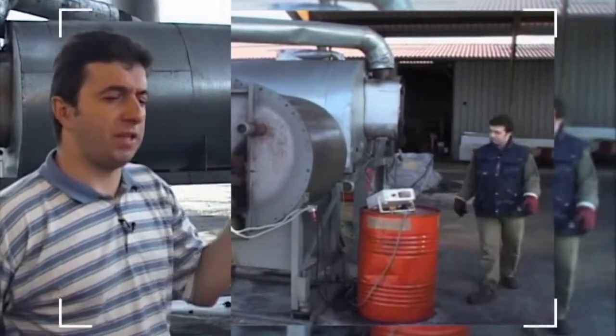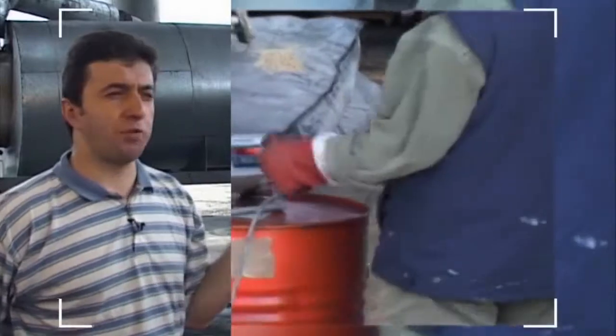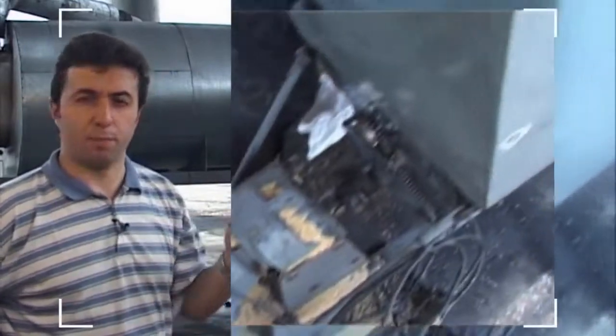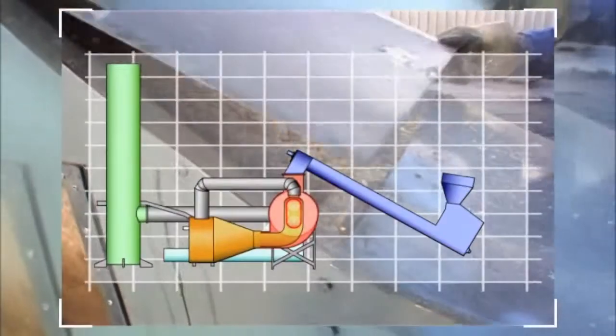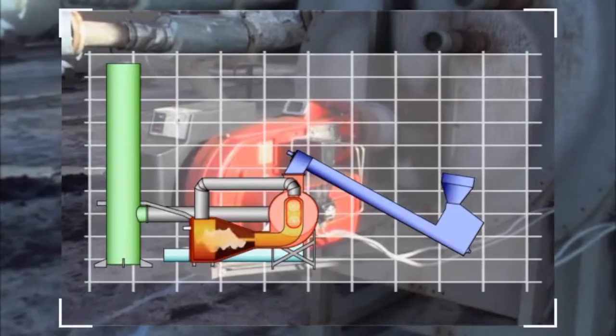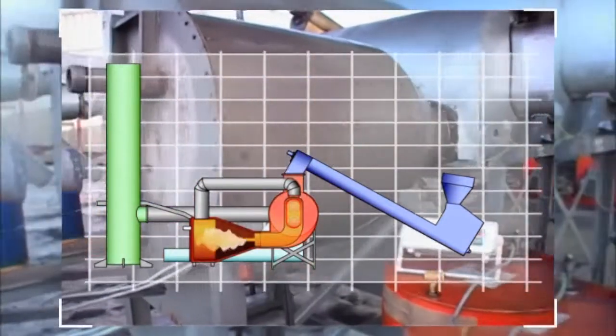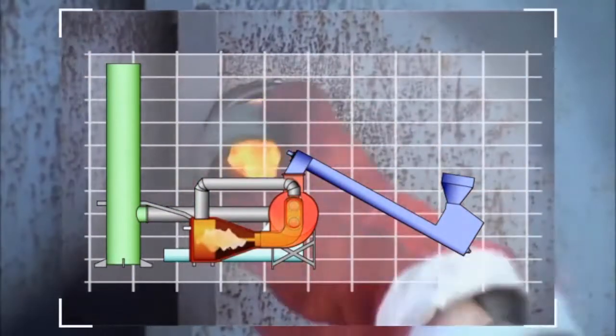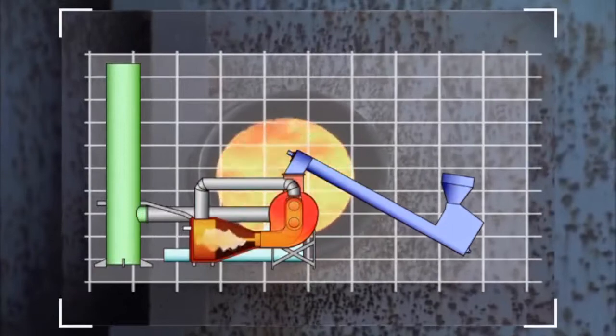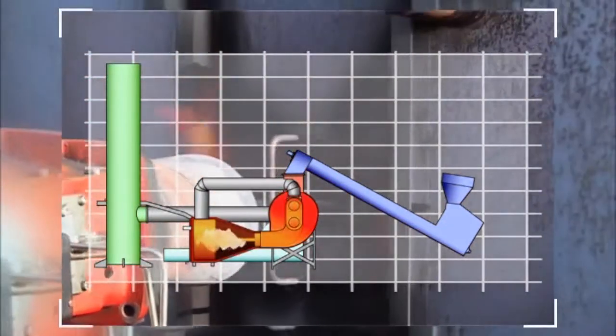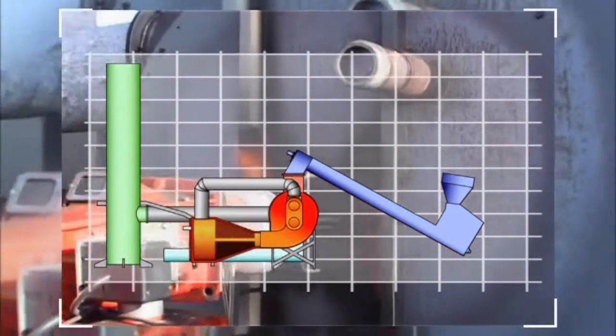The machine depends on the biomass. The more biomass it's fed, the more energy is provided to make the machine function. To start the machine, an oil burner heats the combustion chamber up to 500 or 600 degrees Celsius, depending on the kind of biomass being used.